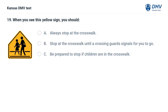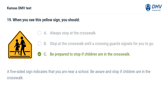When you see this yellow sign, you should: A. Always stop at the crosswalk. B. Stop at the crosswalk until a crossing guard signals for you to go. C. Be prepared to stop if children are in the crosswalk. The answer is C. Be prepared to stop if children are in the crosswalk. A five-sided sign indicates that you are near a school. Be aware and stop if children are in the crosswalk.